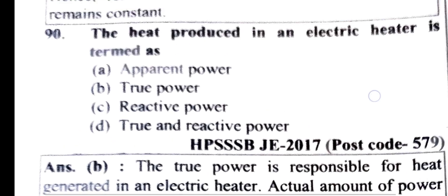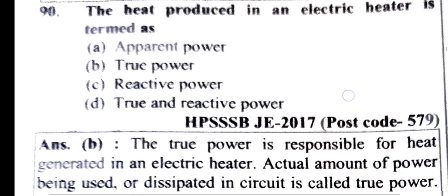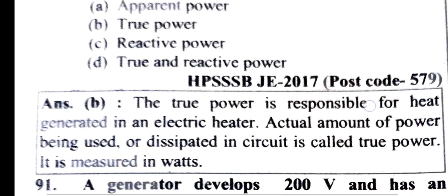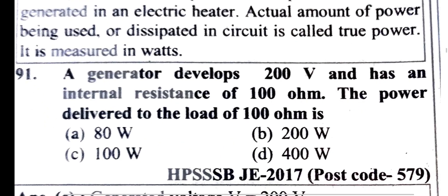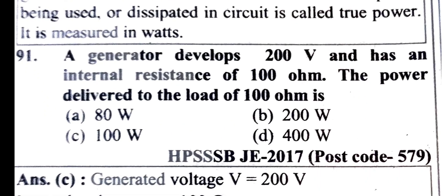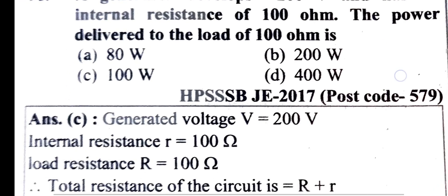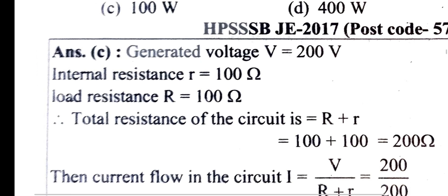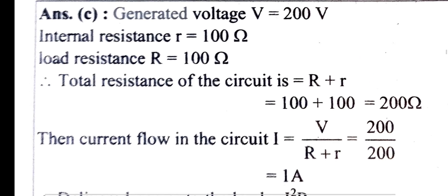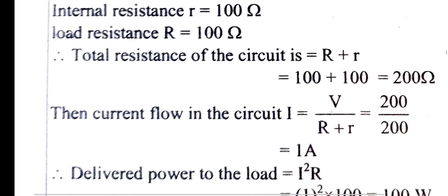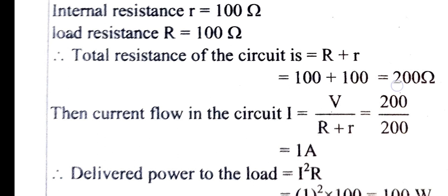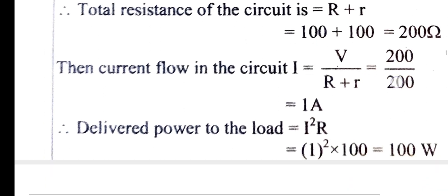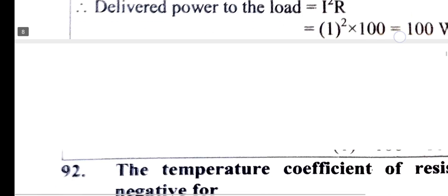The heat produced in an electric heater is termed as true power. A generator develops 200V and has an internal resistance of 100 ohm. The load resistance is also 100 ohm. Total resistance is R plus R equals 200 ohm. The current equals V divided by total resistance, giving 200 divided by 200 equals 1A, and the power delivered to the load can be calculated accordingly.